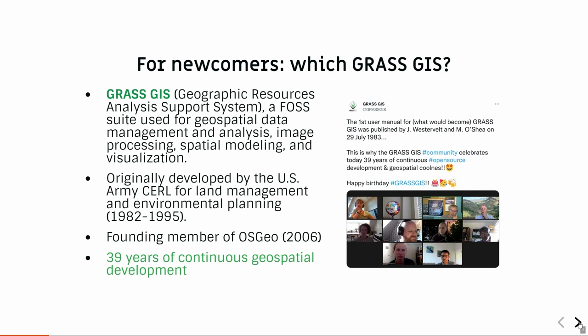GRASS GIS is a system which basically does all kinds of geospatial analysis with raster data, vector, time series support and so on. There's a graphical user interface. You can do image processing, powerful spatial modeling like watershed modeling, landscape analysis, structure analysis. Originally, it's a project coming from the US Army. It was started in 1982 with the first release in 1984. In 1984, there was no ubiquitous internet available to everybody — you had to send around magnetic tapes to distribute the software. GRASS itself is the founding member of OSGEO and we now have accumulated 39 years of development. You can follow this on Twitter and other social media channels.